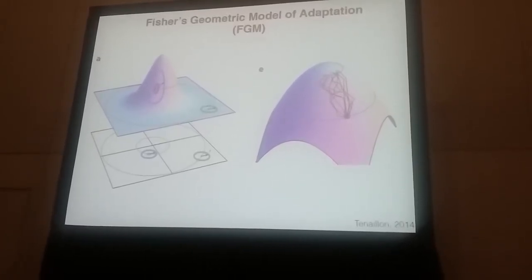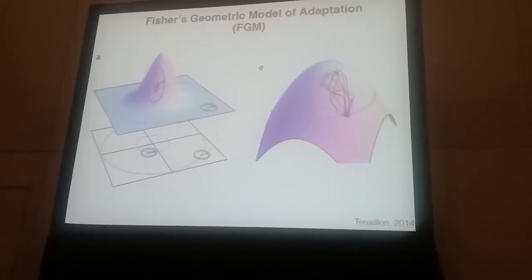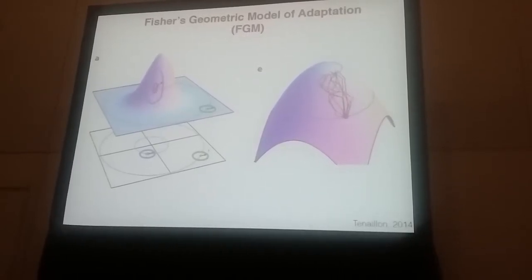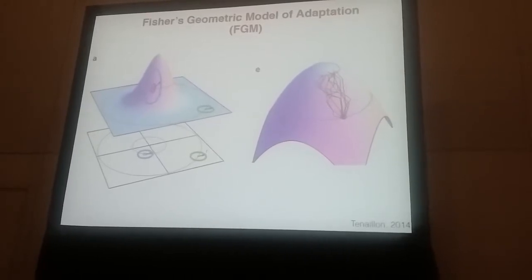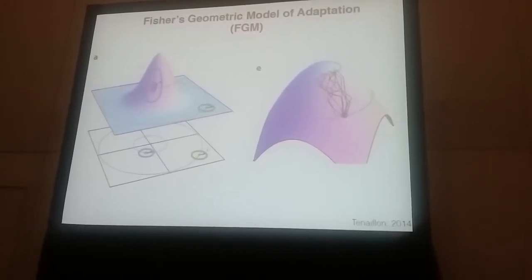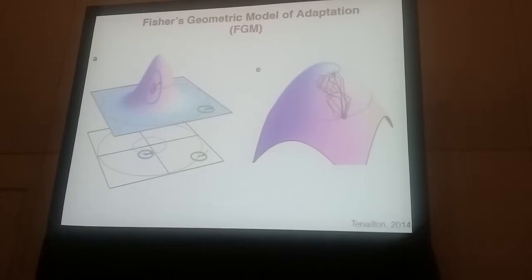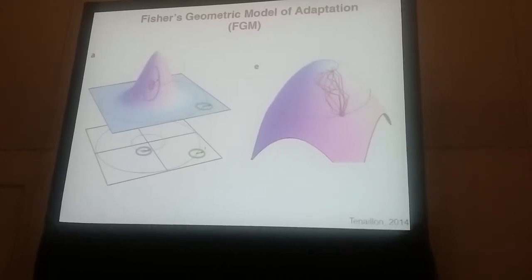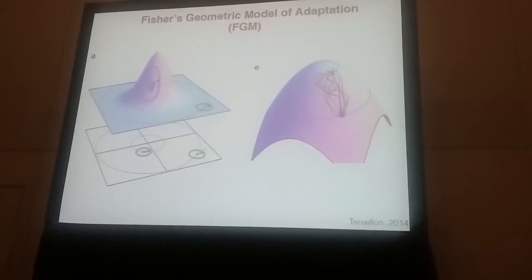Fisher's geometric model is a model of phenotypic adaptation where an organism is represented by a single point in an n-dimensional space. These n dimensions represent n phenotypes of the population that are important for fitness or being selected upon. An organism is a point, and the optimal combination of phenotypes is also a point. As you decrease distance from the optimum, fitness increases. Mutations on that landscape are vectors because they change the phenotypes of an organism, and in simulations a population adapts by a series of these mutation vectors.